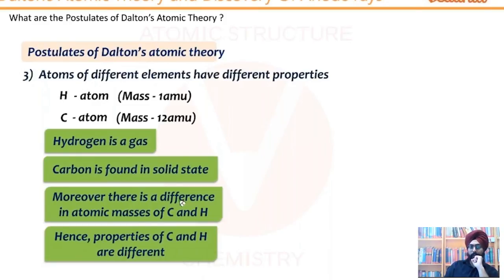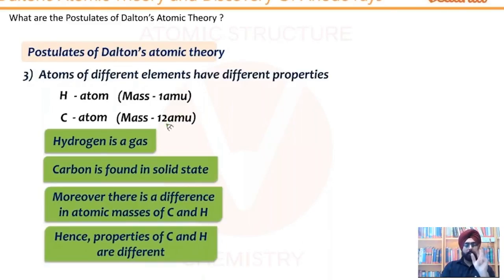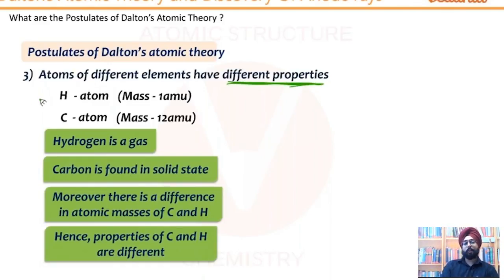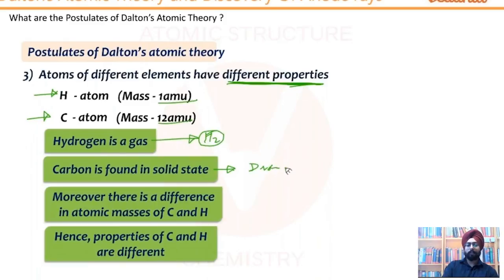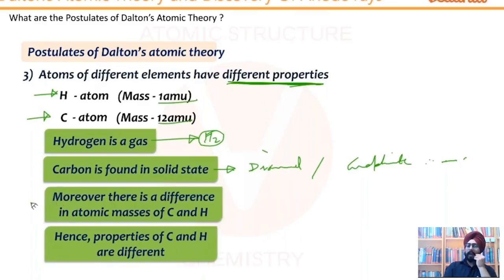Moving on to the third postulate of Dalton's atomic theory. We discussed same elements in the second postulate; now we are talking about atoms of different elements. Atoms of different elements have different properties. If we talk about hydrogen atom, its mass is one atomic unit. Carbon atom has a mass of 12 atomic mass units. H2 becomes a gas; carbon is generally found in a solid state — you have diamond, graphite, and so on. Hydrogen is generally found in nature in a gaseous form, carbon in a solid form.